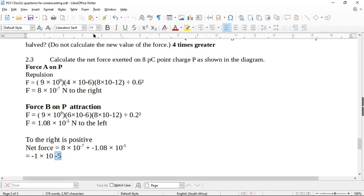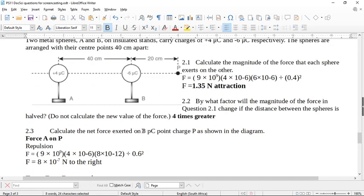So I've got minus 1 times 10 to the negative 5, and this will obviously be in Newtons. What is the minus telling us? It is telling us the direction, so we need to put it as a positive statement of the answer. So it's going to be 1 times 10 to the negative 5 Newtons to the left. We know it's to the left, because the sign is negative.